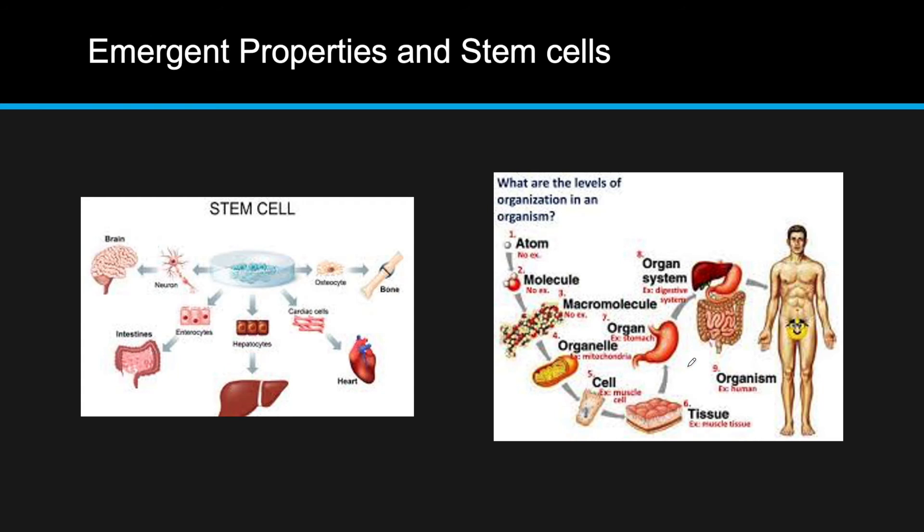That leads us to emergent properties. As you can see by the name, it's when properties emerge. A cell can carry out the basic functions of life as we have just depicted. Now a group of cells will form a tissue, and this tissue will be able to do things that the cell cannot.